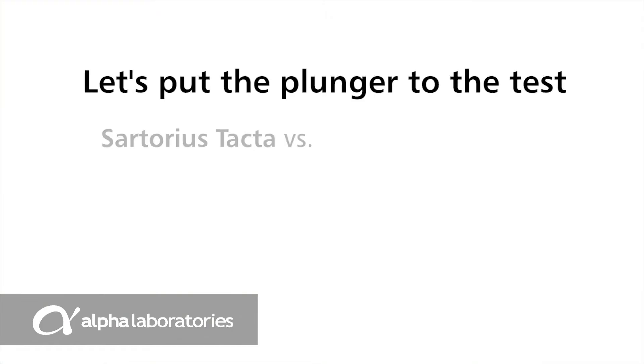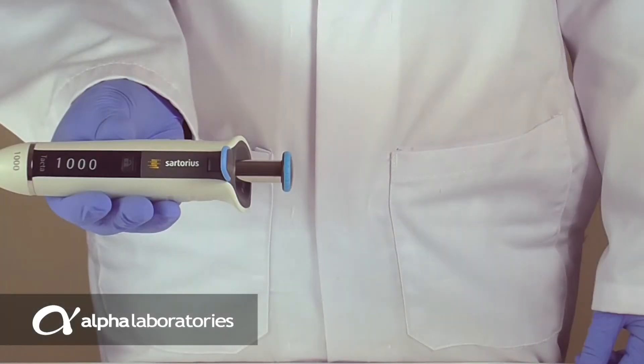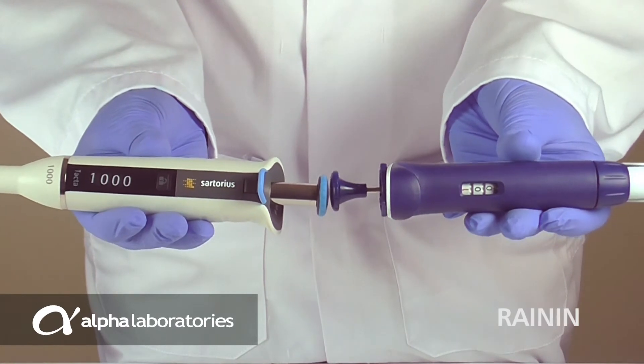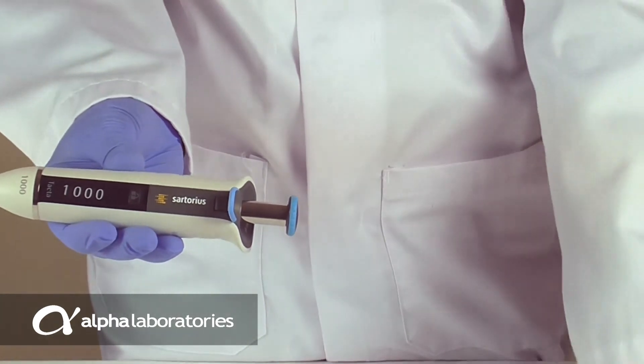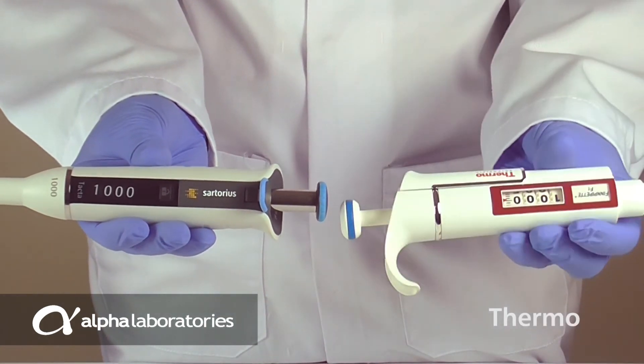Just do the plunger test to see how well TACTA performs against other pipettes you may be considering. Comparing the same volume models, adjust each pipette to its maximum. Then push the plungers against each other. The plunger of the pipette with the lightest pipetting force will depress first.